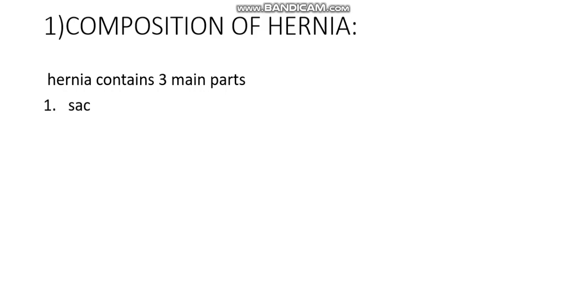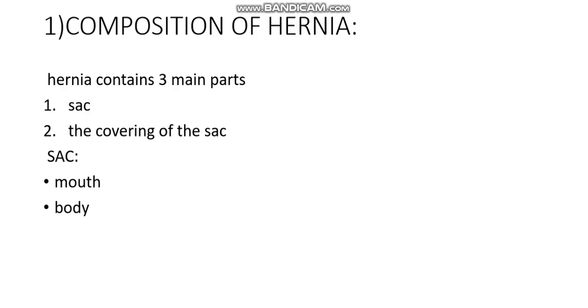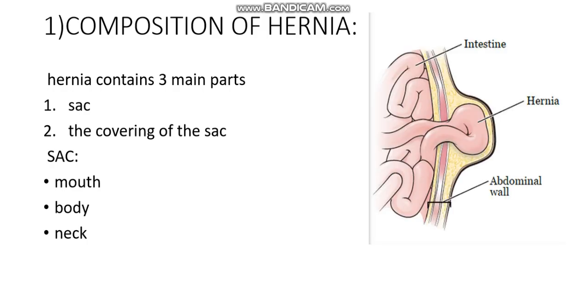Now, what is the composition of hernia? Hernia contains three main parts: it contains a sac, and it contains its covering. The sac has a mouth, a body, and a neck. Here you can see in this picture the protrusion of abnormal abdominal content — this is the body, this is the neck, and this is the mouth of the hernia.